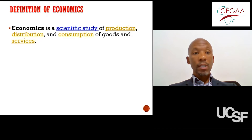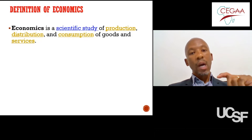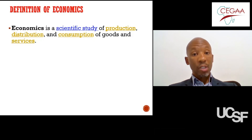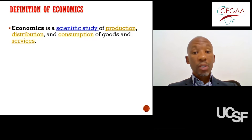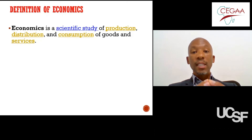Secondly, once the government has decided on what goods and services to produce, they need to determine how these goods and services will actually reach the intended beneficiaries. The government therefore needs to develop distribution systems to make sure that the services they are providing are actually distributed and reach their people. Lastly, there is consumption — for whom are they producing these goods and services in terms of the intended beneficiaries? That's basically the scientific study within government institutions answering three broader questions, which are the three main economic questions.